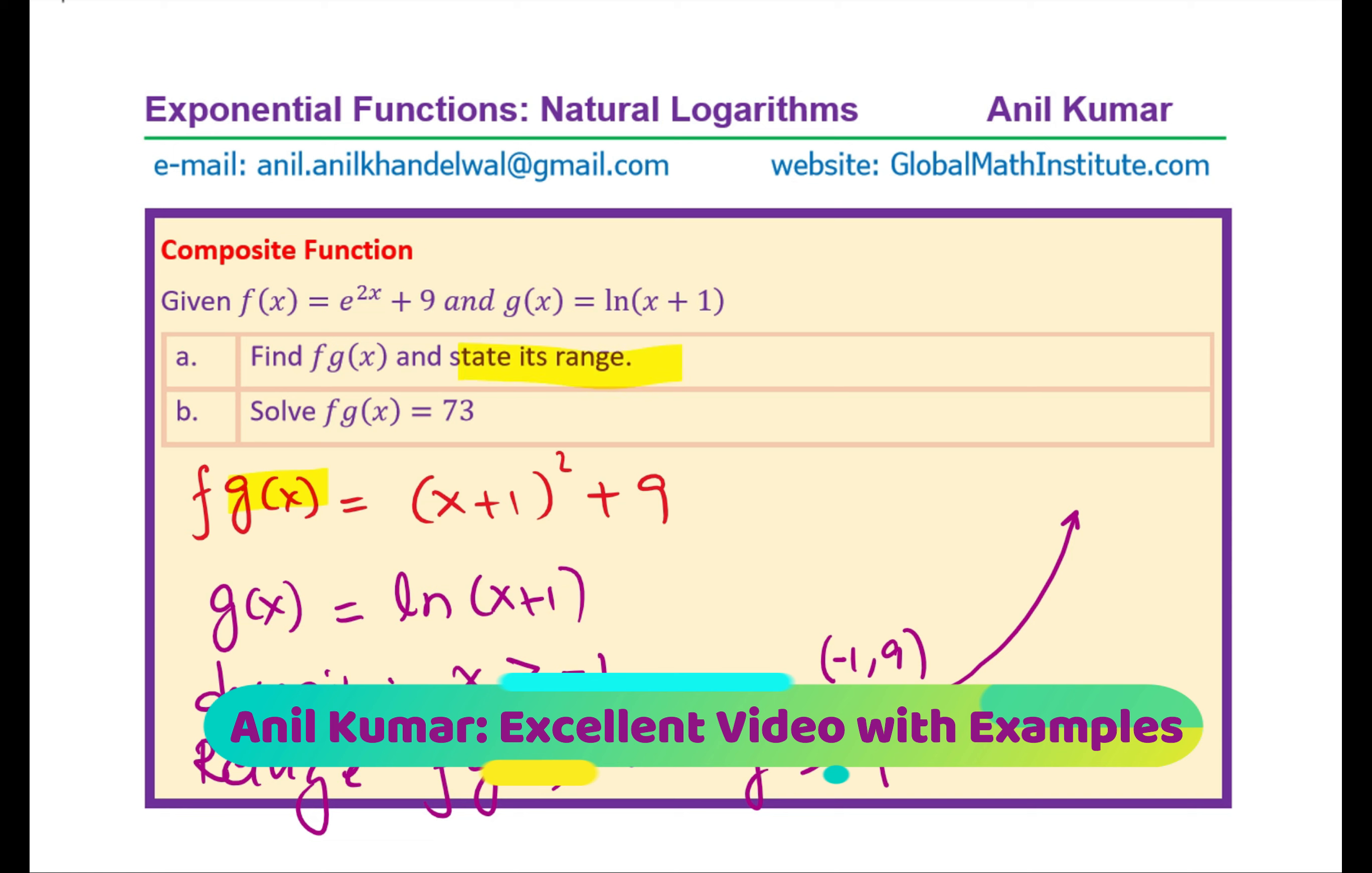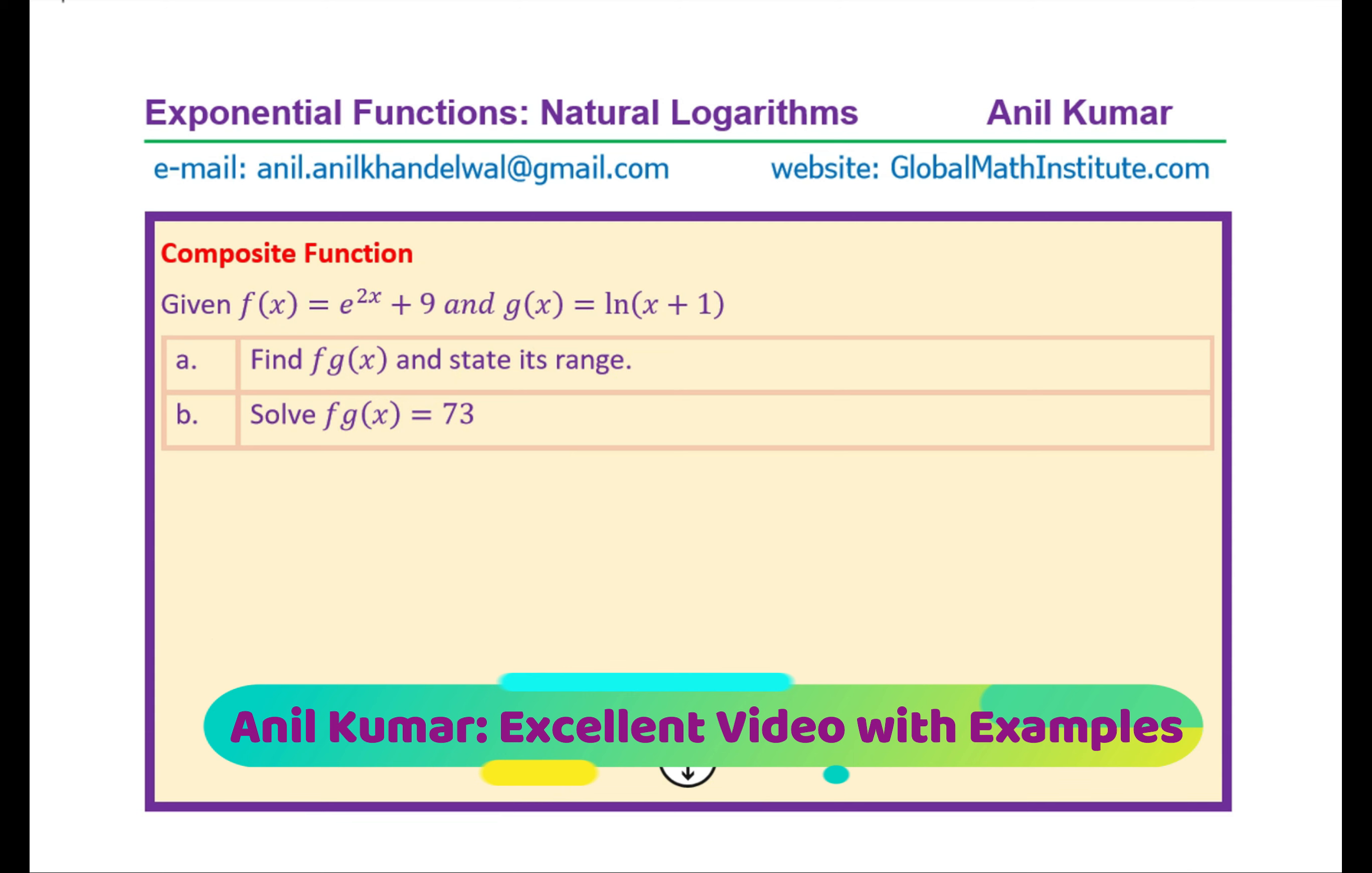And therefore, we can write the range of f of g of x as y greater than 9, right? It is not equal to 9. So y greater than 9. You get the idea. Since this point is minus 1, so of course it is greater than 9 but not equal to 9. So that is the critical part to understand when we write down the range of this function. Now many students might do this mistake, so that is to be taken care of.